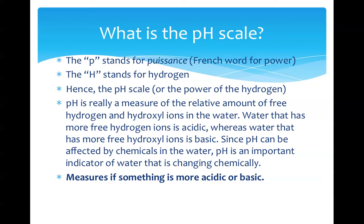Water that has more free hydrogen ions is acidic, whereas water that has more free hydroxyl ions is basic. Since pH can be affected by chemicals in the water, pH is an important indicator of water that is changing chemically. It also measures if something is more acidic or more basic.